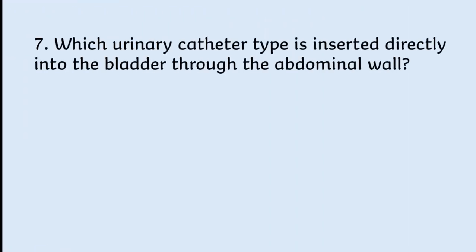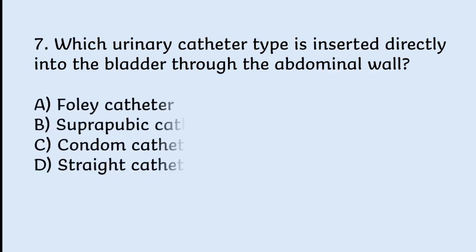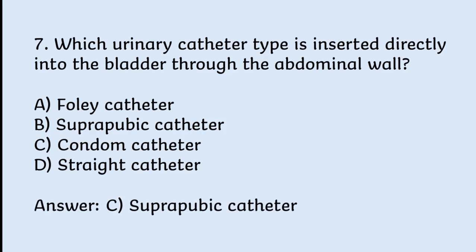Which urinary catheter type is inserted directly into the bladder through the abdominal wall? Options: Foley catheter, suprapubic catheter, condom catheter, straight catheter. Correct answer is suprapubic catheter.